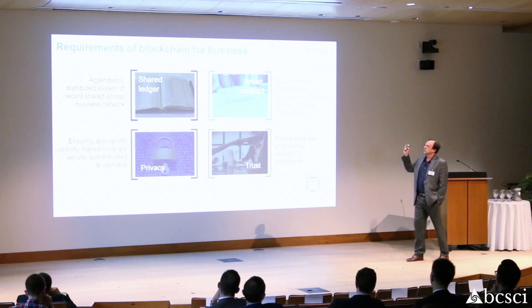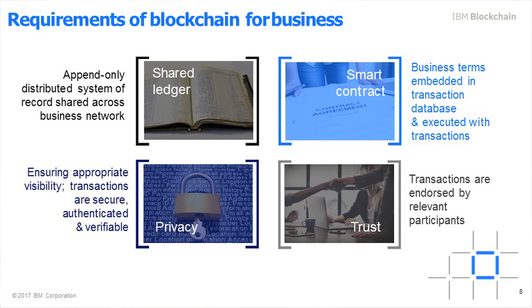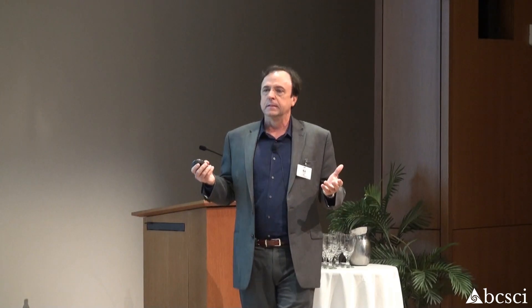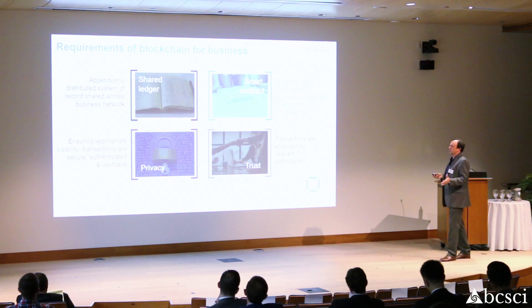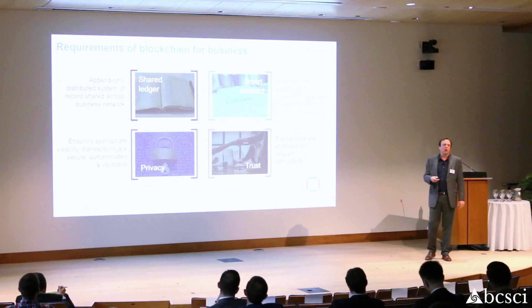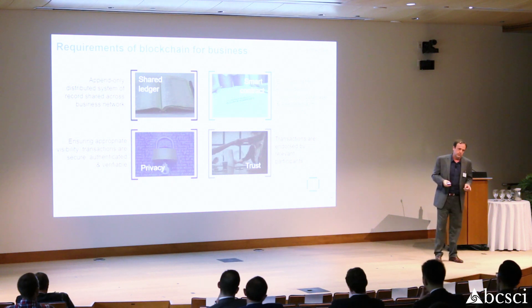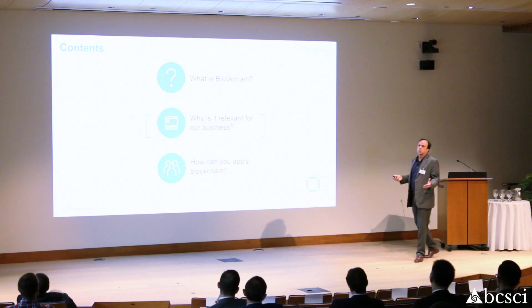There are four areas that focus on the requirements for blockchain in business: shared ledger, smart contracts, privacy, and trust. Smart contracts — another key IBM blockchain component — are the business rules you set up with your partners, and they come in the form of a contract. Privacy uses state-of-the-art encryption; you share keys and must be assigned access. Trust means everybody in the blockchain knows who they're dealing with.